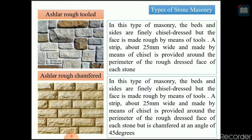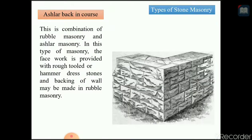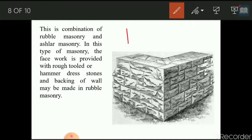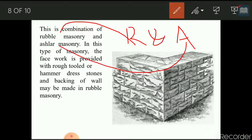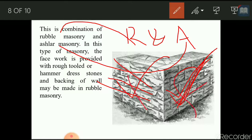The next type is ashlar back in course, which is a combination of rubble masonry and ashlar masonry — a combination of R and A. In this type, the face work is provided with rough tooled or hammer dressed stone, and the backing of the wall may be made of rubble masonry. The backing of the wall is rubble masonry and the face is provided with rough tooling.